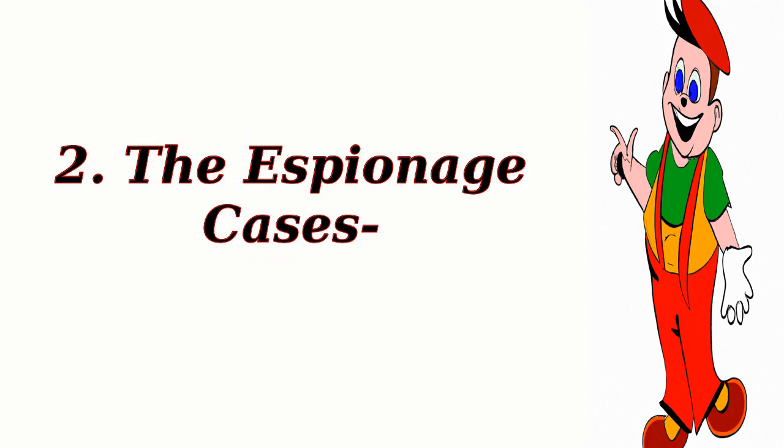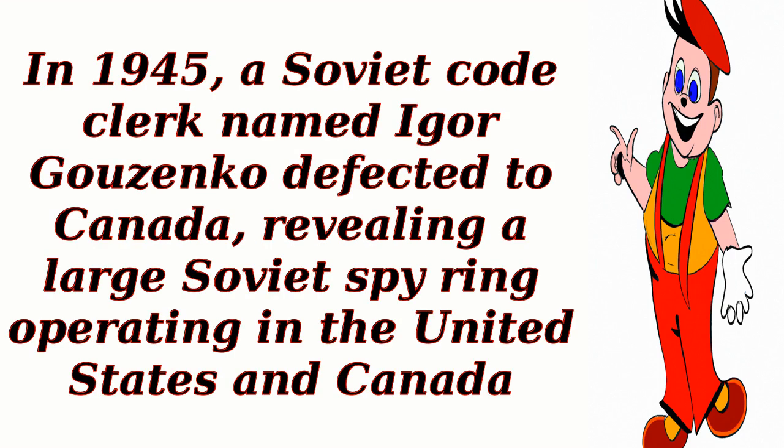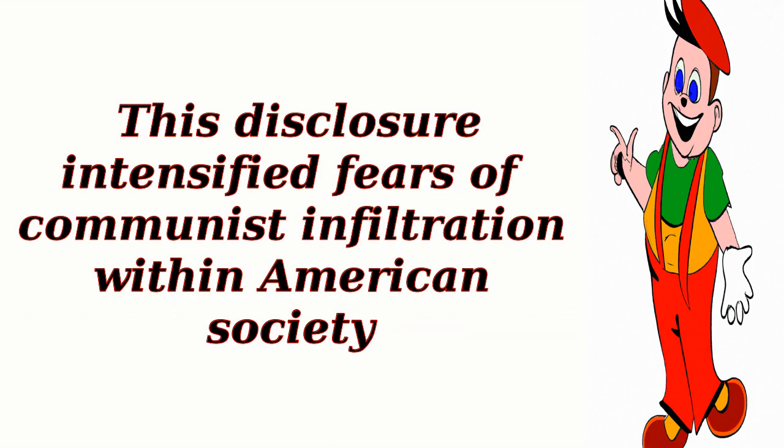2. The Espionage Cases. In 1945, a Soviet code clerk named Igor Guzenko defected to Canada, revealing a large Soviet spy ring operating in the United States and Canada. This disclosure intensified fears of communist infiltration within American society.